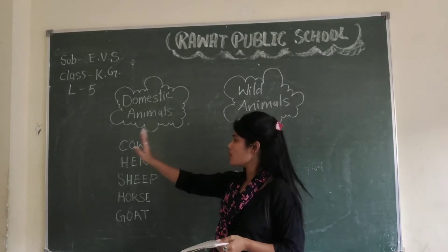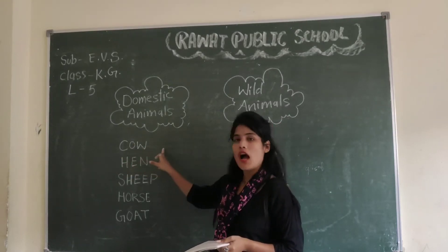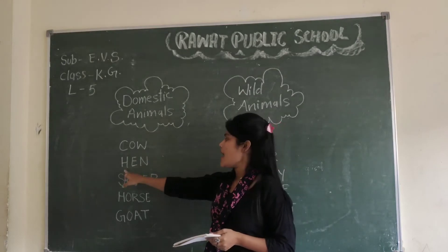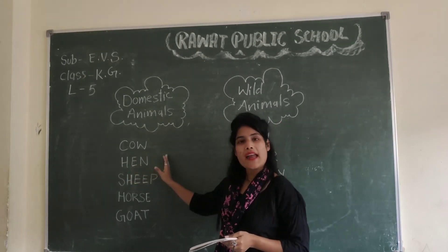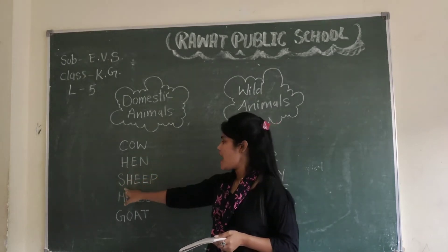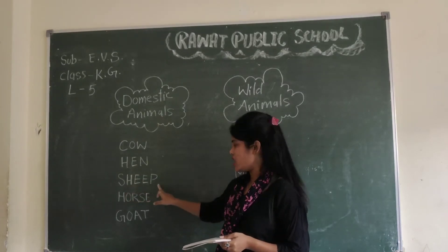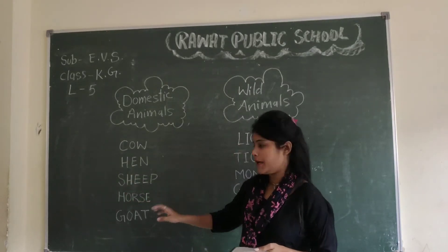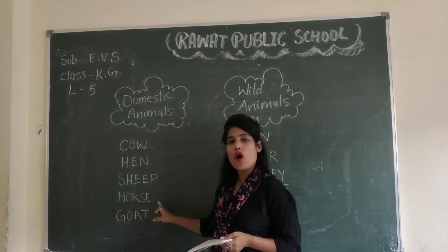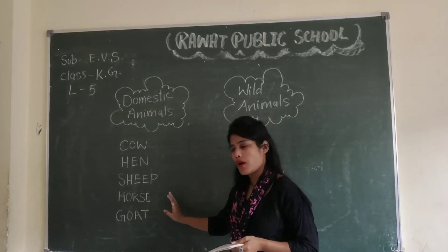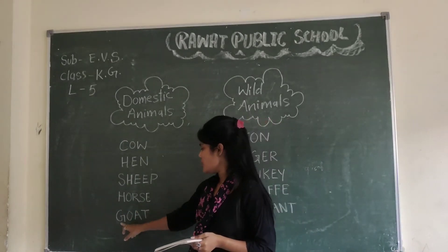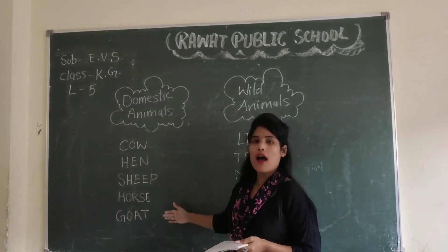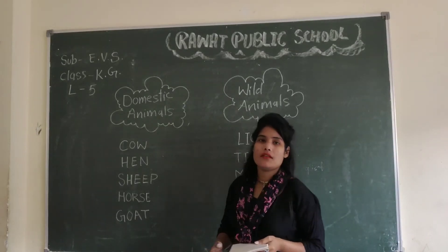These are called domestic animals. Domestic animals include cow — cow means gaay. Hen. Sheep — sheep means bhed. Horse — H-O-R-S-E, horse means ghoda. Goat — G-O-A-T, goat means bakri. These are domestic animals.